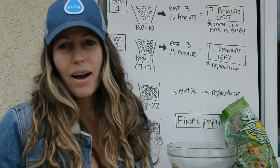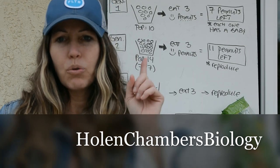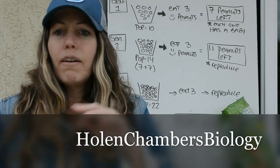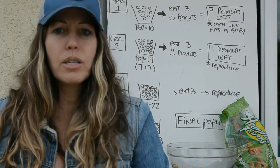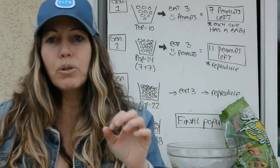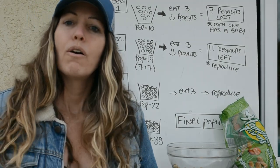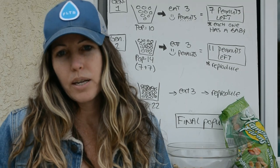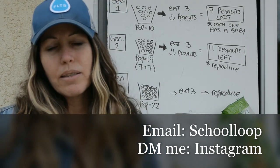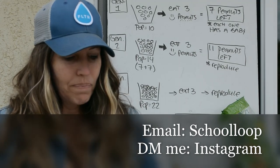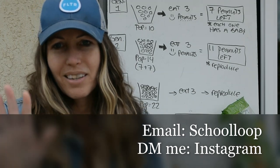Hopefully this helps you out. Before you do this lab, watch my lecture on Hardy-Weinberg first. If you don't have Teddy Grahams, use whatever you've got — designate half your cookies as happy and half as sad, or use M&Ms where red are happy and blue are sad. You'll need enough to make a final population of 38, so about 40 gummy bears, M&Ms, or peanuts. Email me on School Loop or DM me on Instagram at Holland Chambers Biology with any questions, and submit your final data, questions, and answers on Google Classroom. Stay safe!